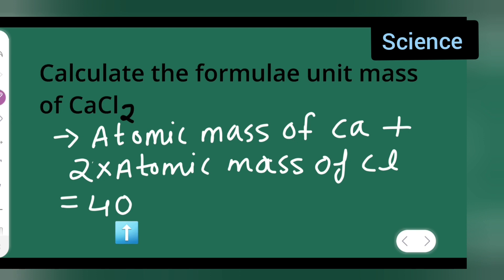Plus twice the atomic mass of Cl. What is the atomic mass of Cl? 35.5. So write down 35.5.